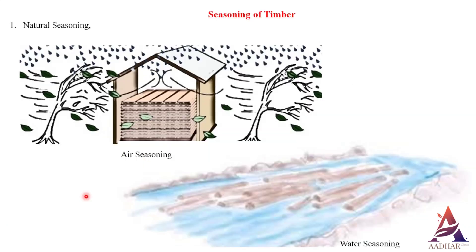Water seasoning. Water seasoning is the process in which timber is immersed in water flow, which helps to remove the sap present in the timber. It will take two to four weeks of time, and after that the timber is allowed to dry. Well seasoned timber is then ready to use.